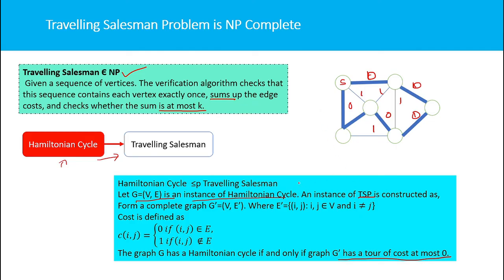This reduction can be done in polynomial time, so we have reduced the Hamiltonian Cycle problem to the Traveling Salesman Problem — both are essentially the same. Since the Hamiltonian Cycle problem is NP-hard, the Traveling Salesman Problem is also NP-hard. Since TSP is both NP and NP-hard, we can conclude that the Traveling Salesman Problem is an NP-complete problem.